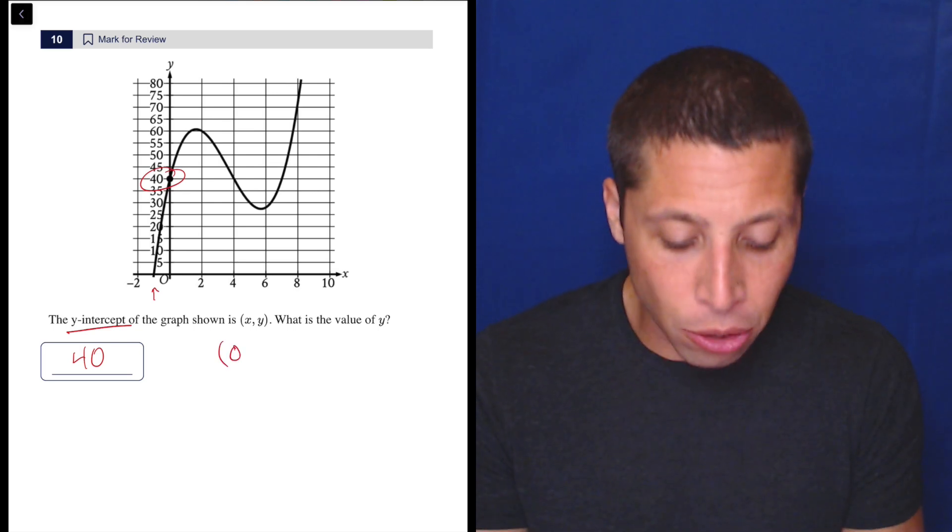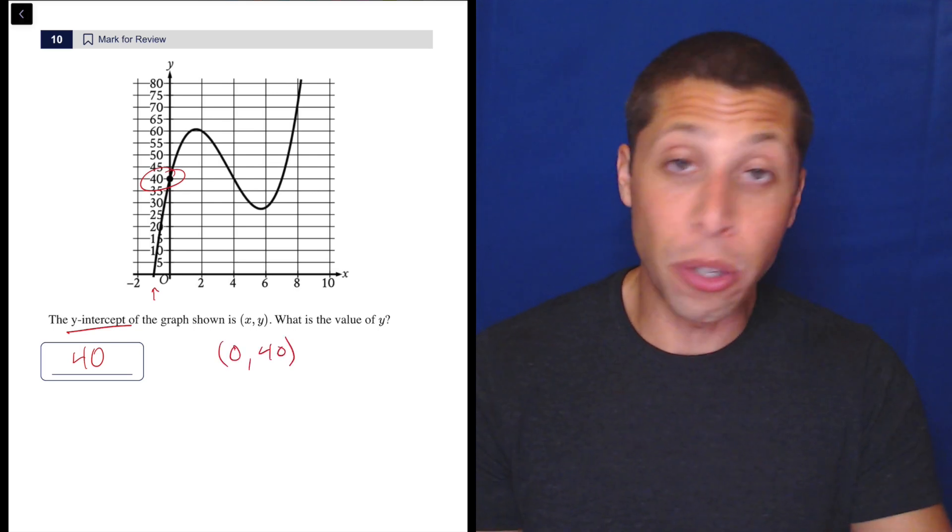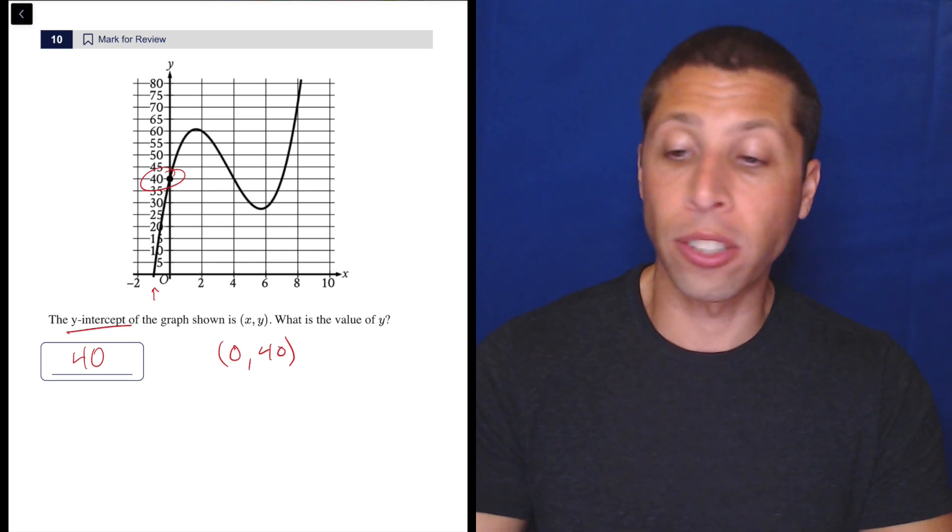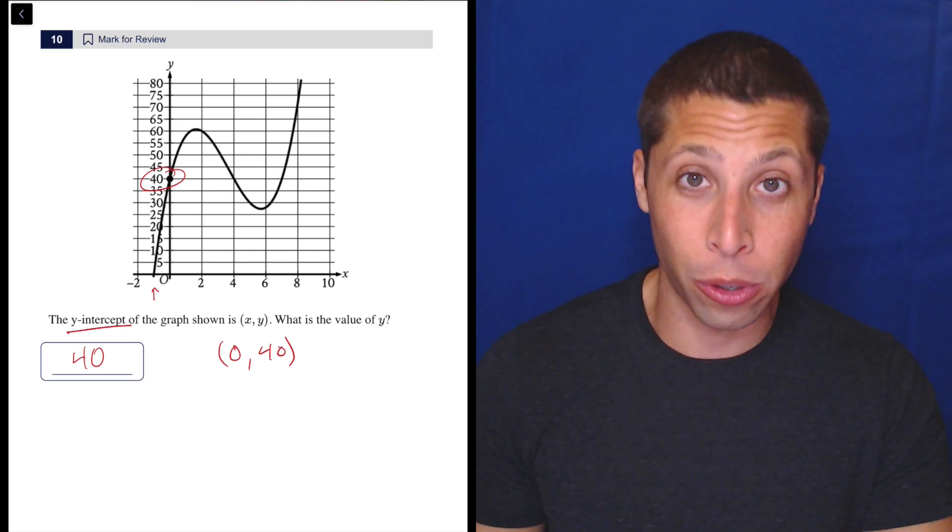It's a point with coordinates. Now the x-coordinate of that point is always going to be zero, because that is what defines a y-intercept. It is where it crosses the y-axis. It is always going to have an x-coordinate of zero. That is something you need to know.